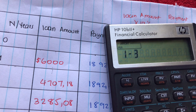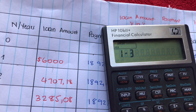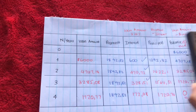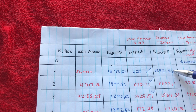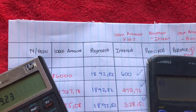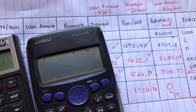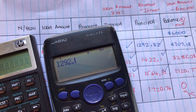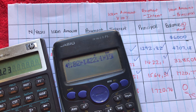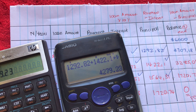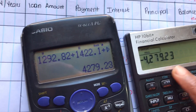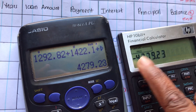Now you want to know the interest, so press equal. The first result shown is the principal amount from year one to year three. To verify, we can manually add: 1292.82 plus 1422.10 plus 1564.31 — and that gives us the same value for principal from year one to year three as shown on the financial calculator.